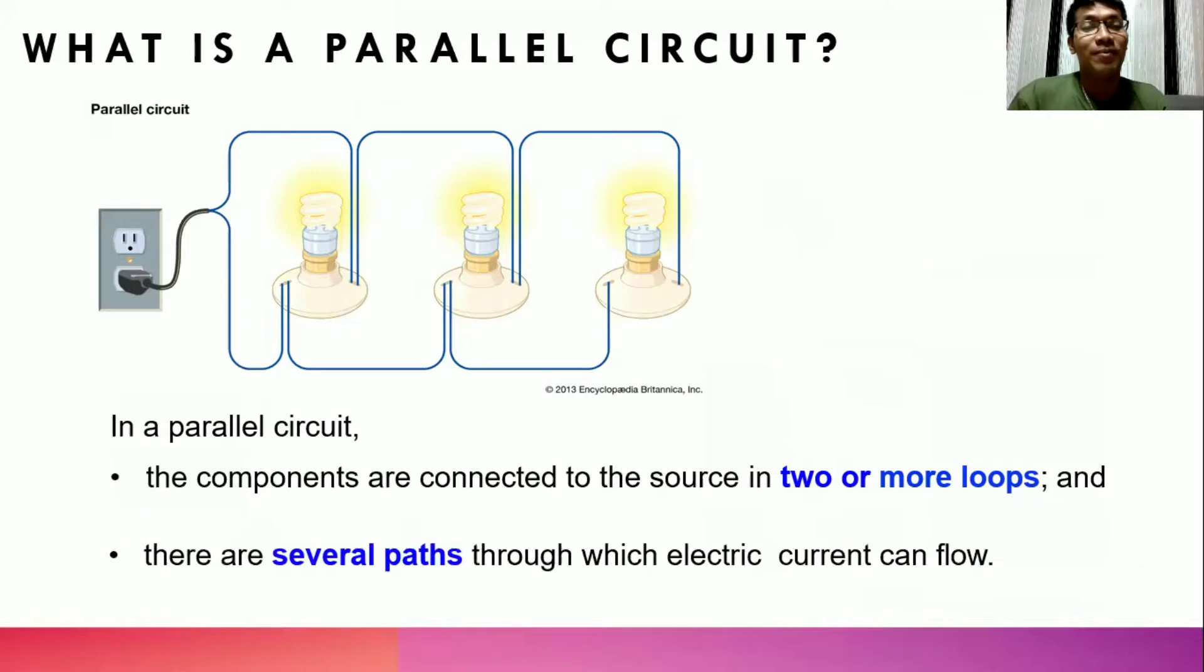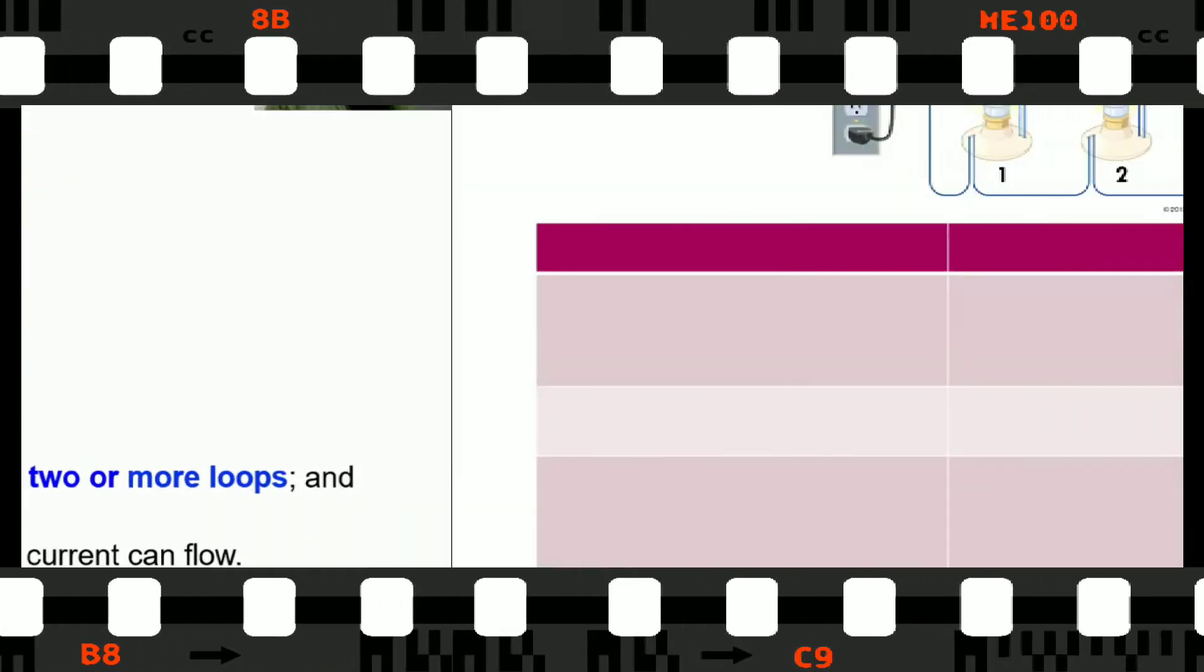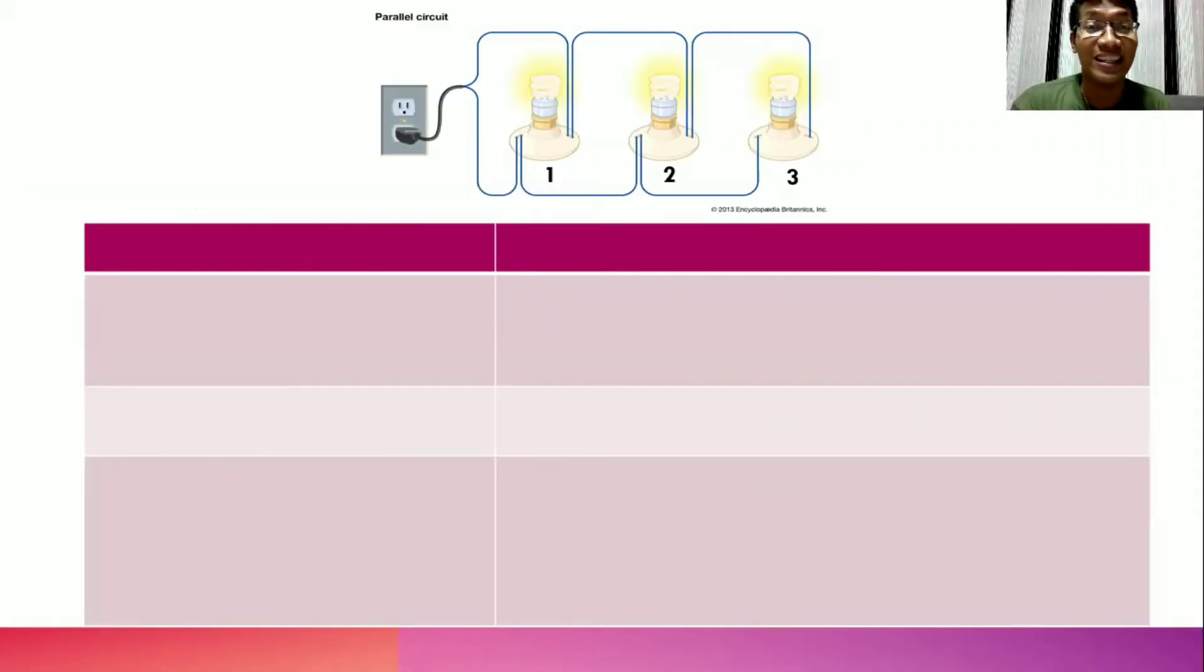Therefore, there are several paths through which the electric current can flow. To further understand the characteristics of a parallel circuit and how it works, let's describe them according to these aspects: current, voltage, and resistance.